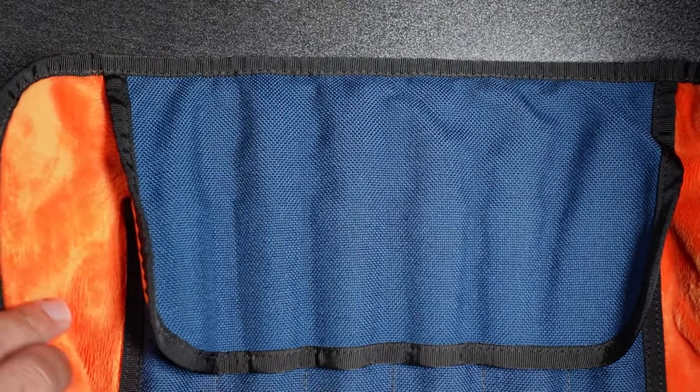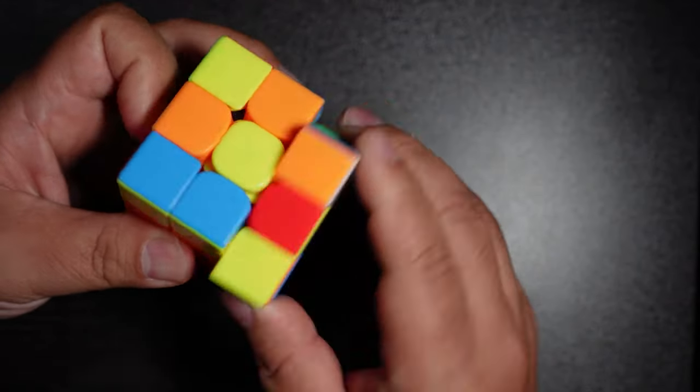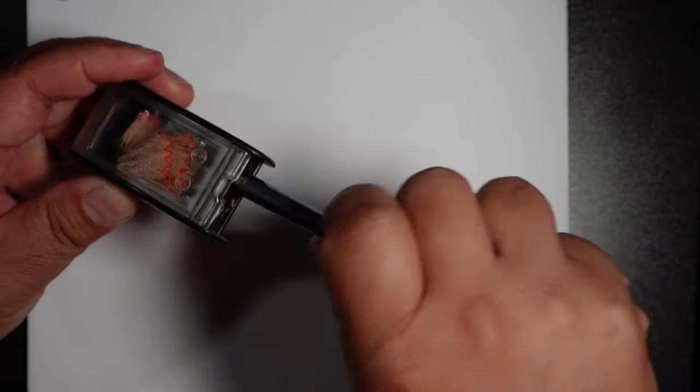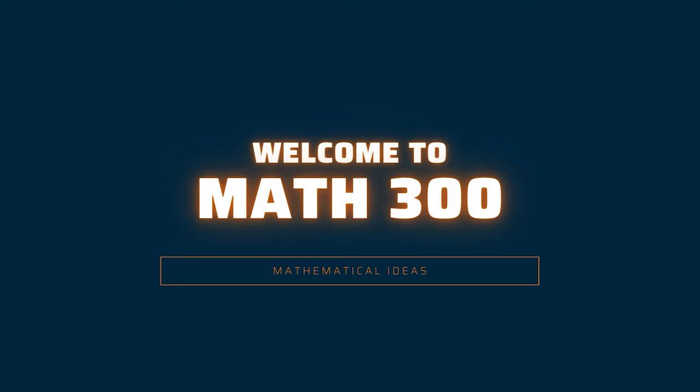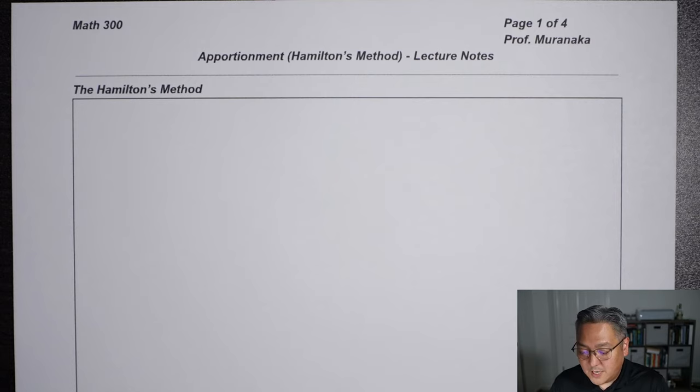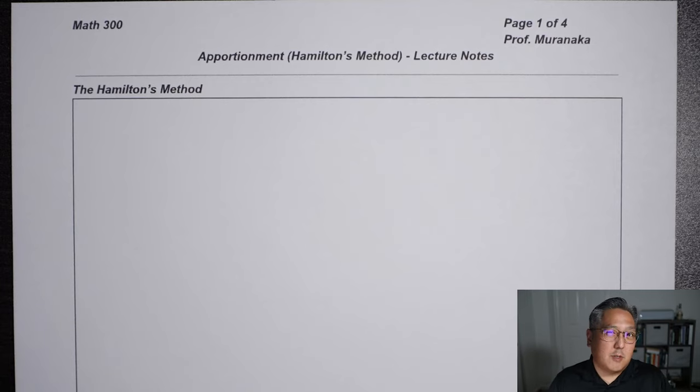Hey everyone! In this video I'm going to describe the first solution we have to the apportionment problem I described last time. After I go over the solution, you'll watch another video that explains the context of a particular example we'll do. In the next video I'll have all the examples worked out and go through each one and some of the different nuances we see when we use this method called the Hamilton Method. Right now I'm going to highlight the process of doing Hamilton's Method in general, and then we'll go through some examples and see how this process can be applied.